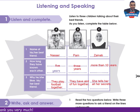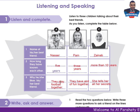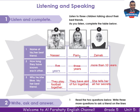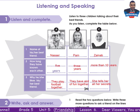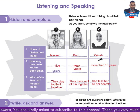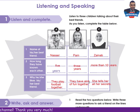Let's listen again to check our answers. Listening 5.7. A: My best friend's name is Nasser. I've known him for five years. I like him because we play football together. B: I've got lots of friends, but my best friend is Pam. I've known her for three years. Why do I like her? Because we have a lot of fun together. C: My best friend is called Zainab. Her family live next door. I've known her for more than 10 years. I tell her all my secrets — that's why I like her.